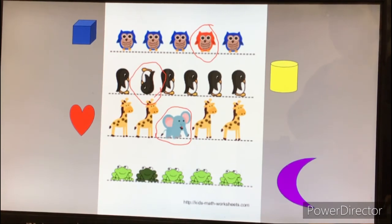Good spying the differences friends. Let's move down to the purple crescent. Which one of these frogs is different? Hmm, they're all green. But this frog is a darker color green. Good spotting that difference friend.